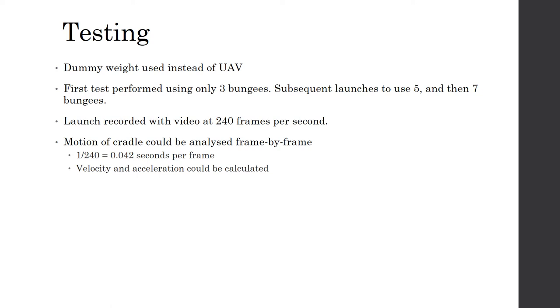By knowing that 0.042 seconds elapsed per frame and that the length of the stripes painted on the side are each 100 millimeters in length, the distance traveled by the UAV over a certain number of frames can then be used to calculate the velocity and acceleration of the UAV.